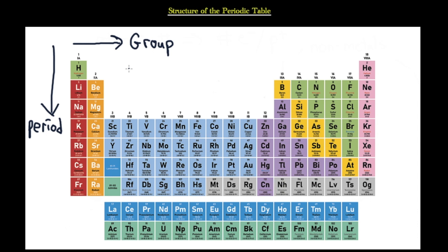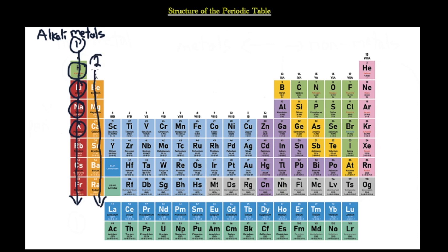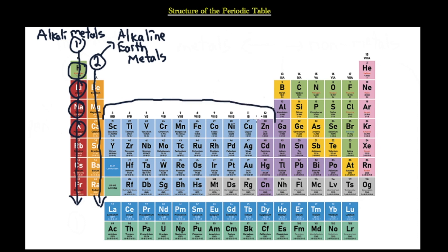Now that we know what groups and periods are, we can identify which category of groups each element falls under, and we're going to discuss those physical and chemical properties as well. The first group — hydrogen, lithium, sodium, potassium, and all elements going down that column — are called the alkali metals. The second group — beryllium, magnesium, calcium, and the rest — are called the alkaline earth metals. The next category, covering the large block in the middle, is the transition metals.